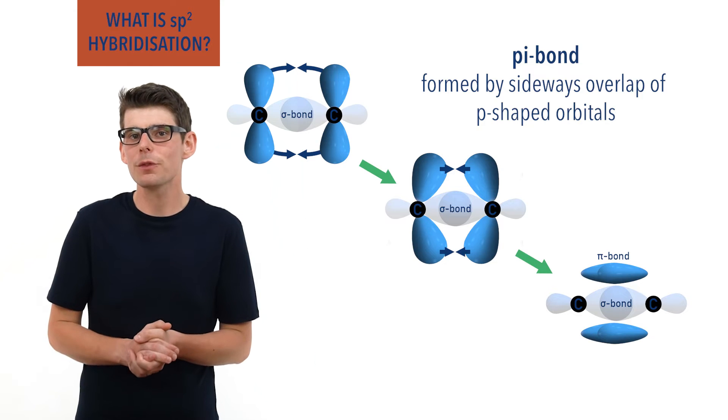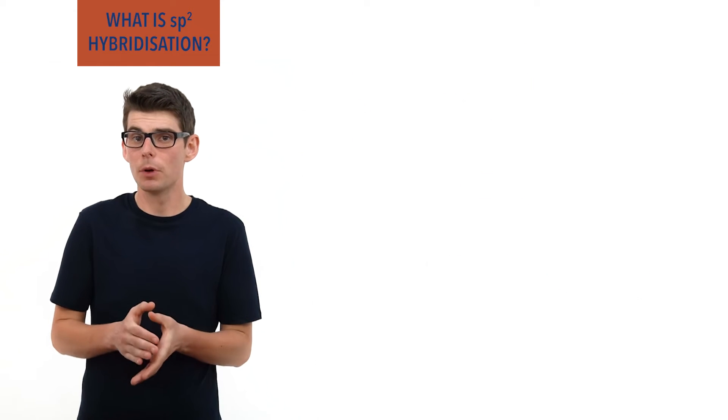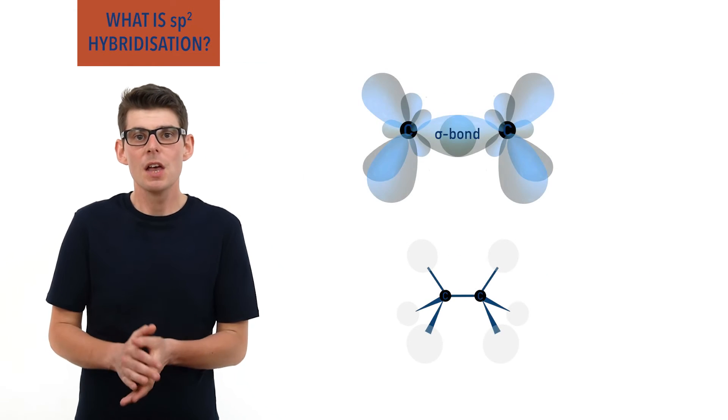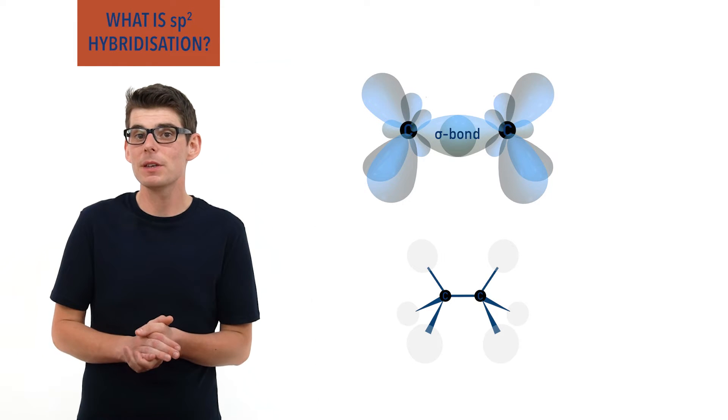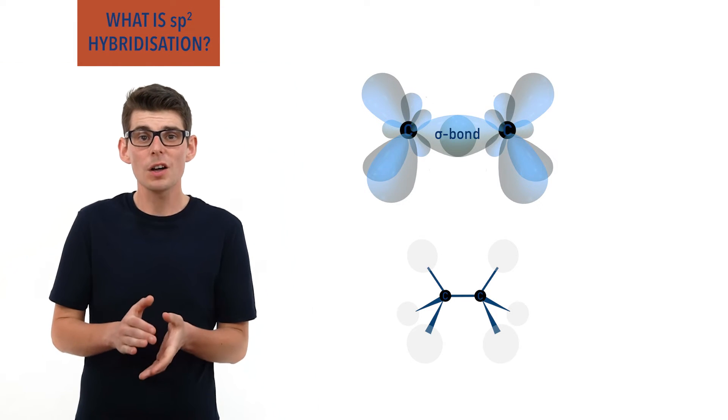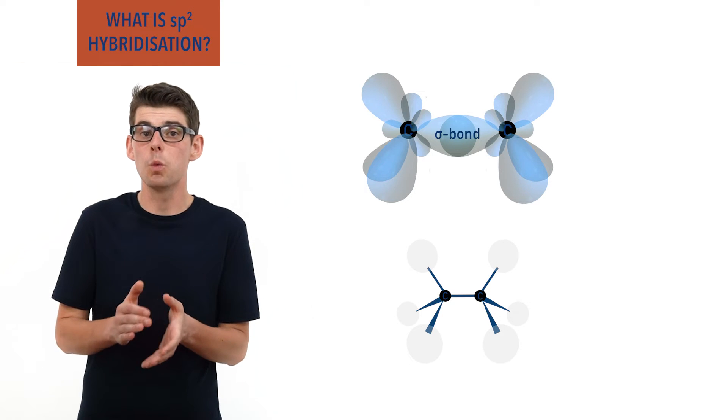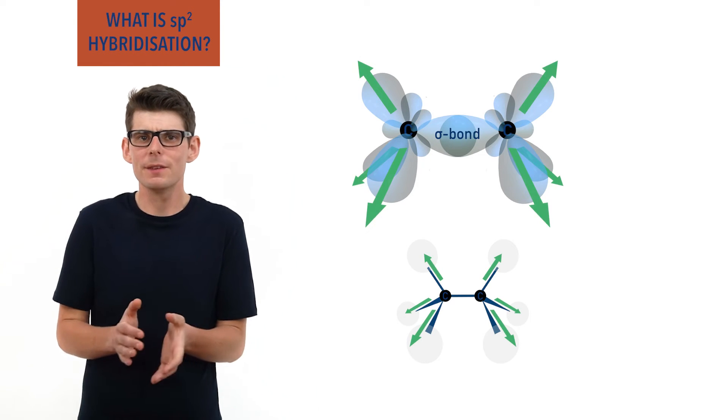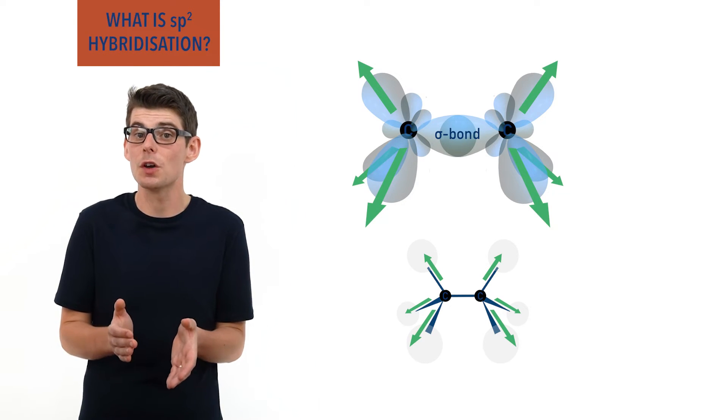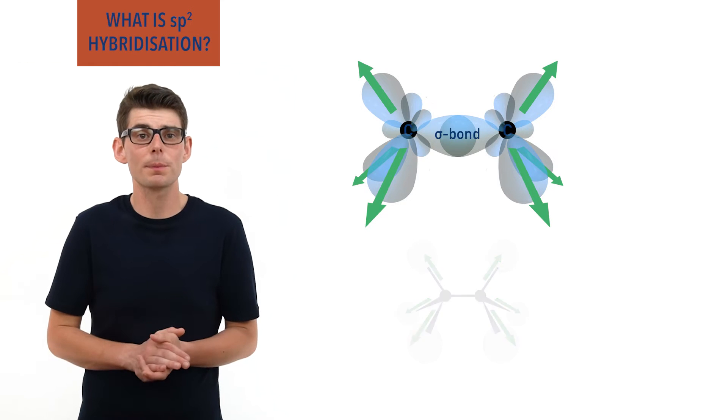If two sp3 hybridized carbon atoms bond together with a sigma bond, the remaining three sp3 hybridized orbitals aren't really p-shaped and they are all pointing away from each carbon, meaning there is no way that two can overlap sideways and form a pi bond.